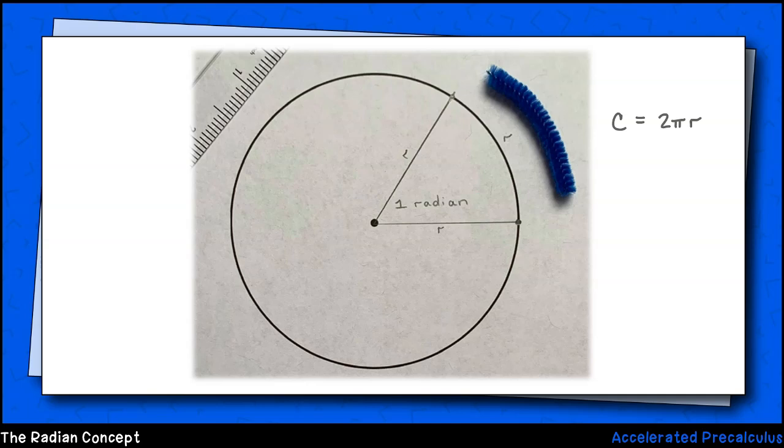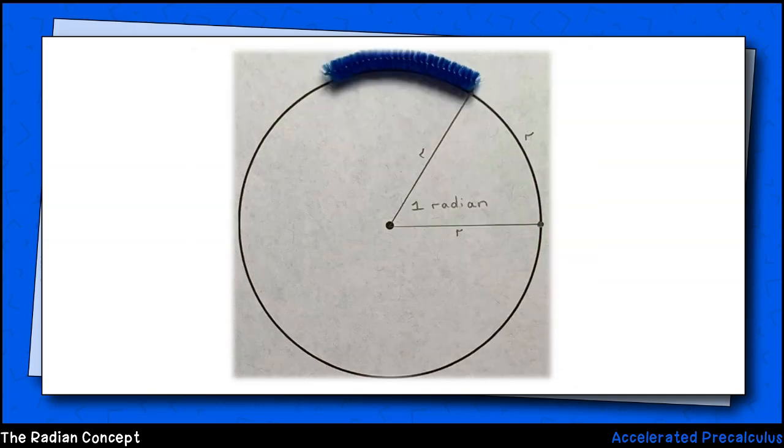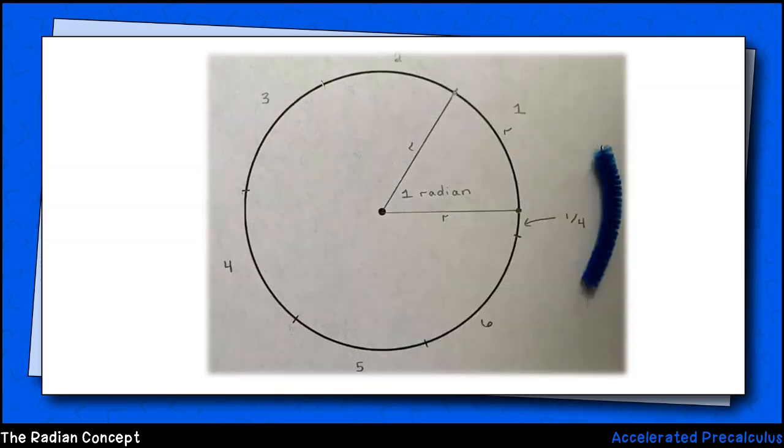Before I show the number of radians in a circle visually, think to yourself what you think the answer may be. So there it is. We have six full radius lengths plus approximately a quarter of an additional radius length.